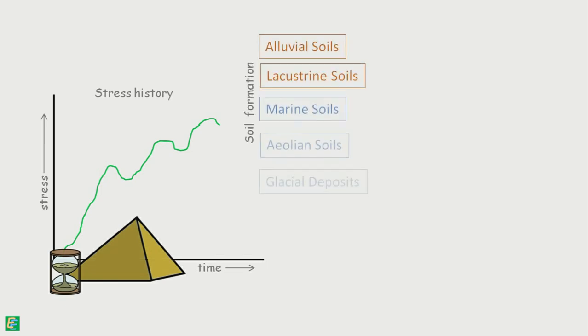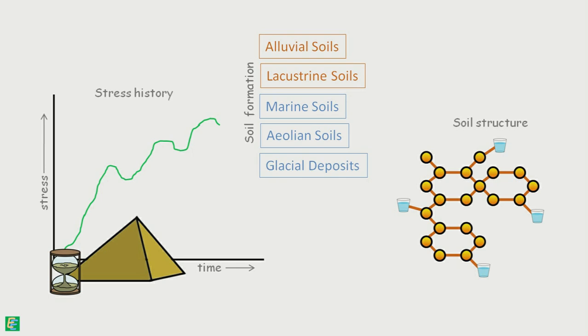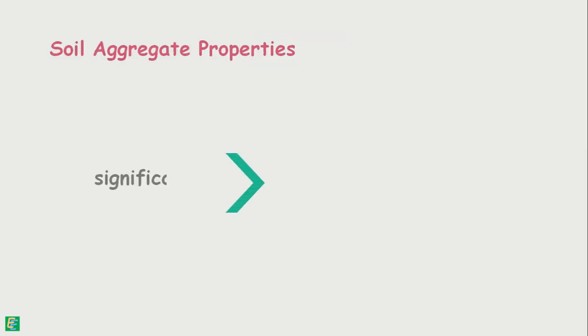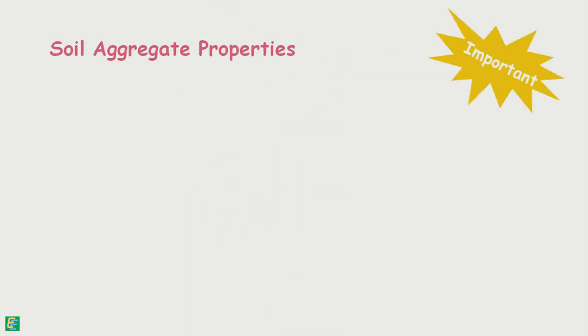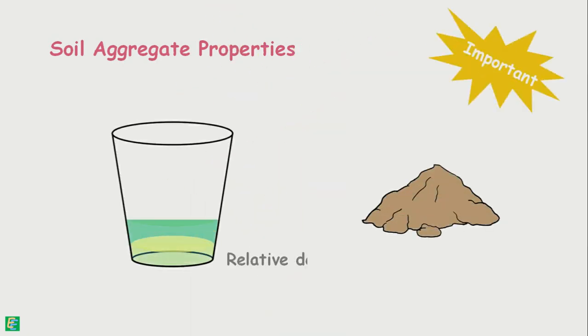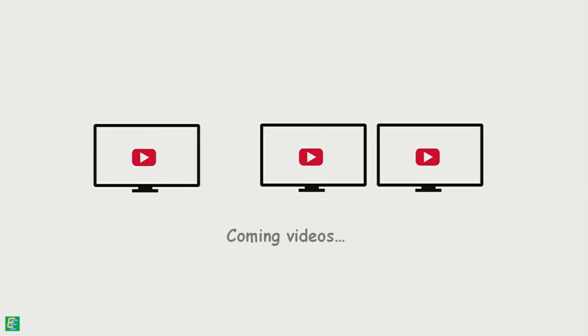These properties are of greater significance for engineering practices. The most important aggregate property of the soil is its relative density. We will learn all these in upcoming videos. Thank you.